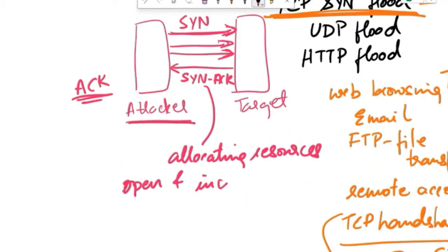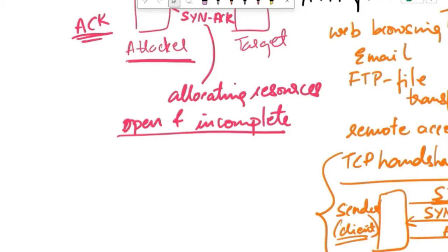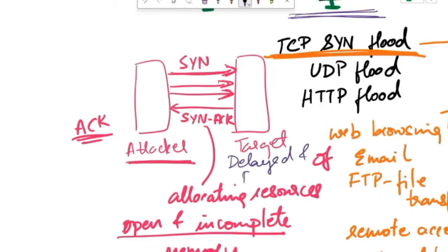These connections remain open and incomplete. With a large number of half-open connections accumulating on the server, its resources such as memory and processing capacity become overwhelmed. Legitimate clients attempting to establish connections with this server are either delayed or denied service due to the lack of available resources.